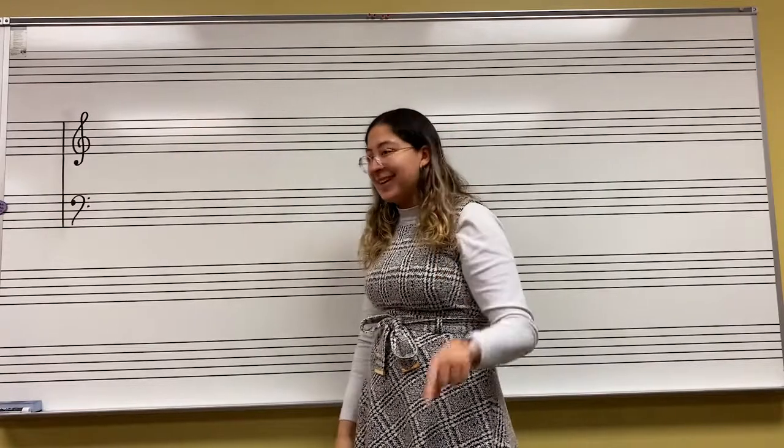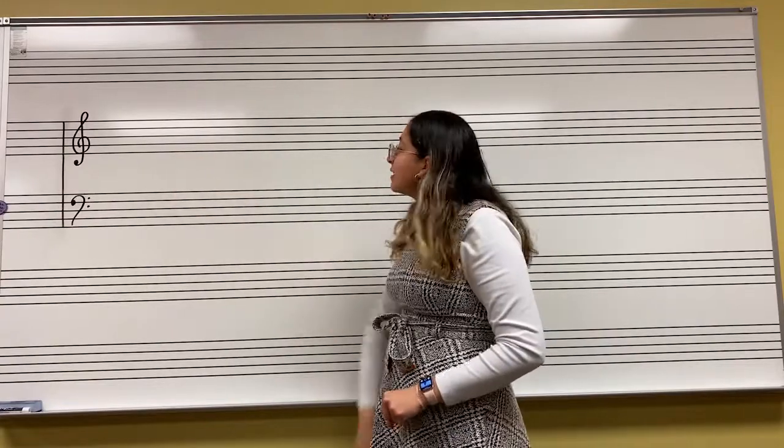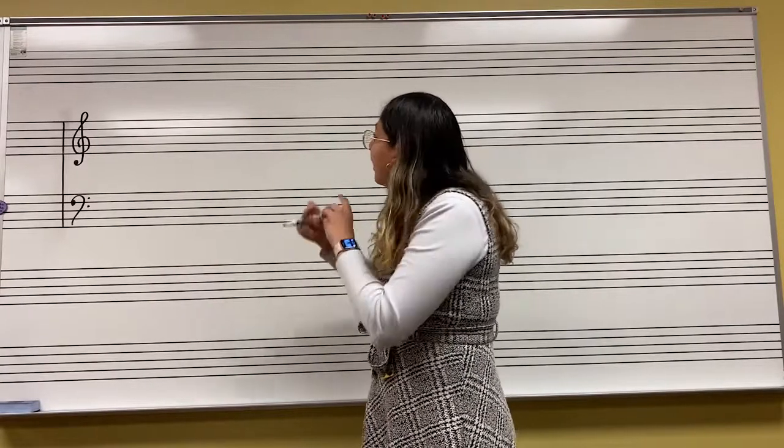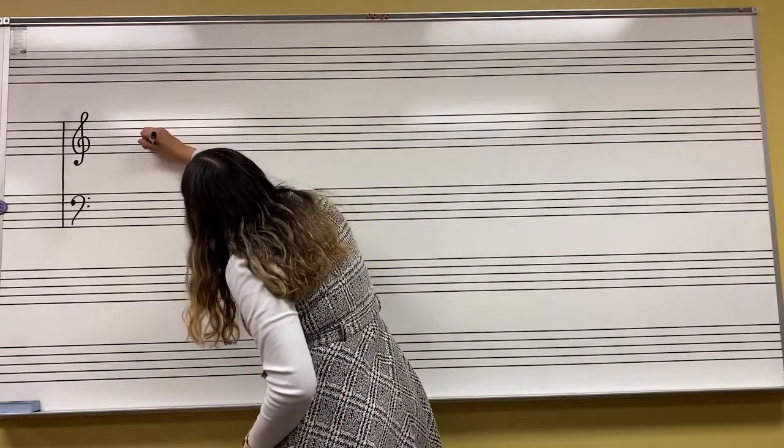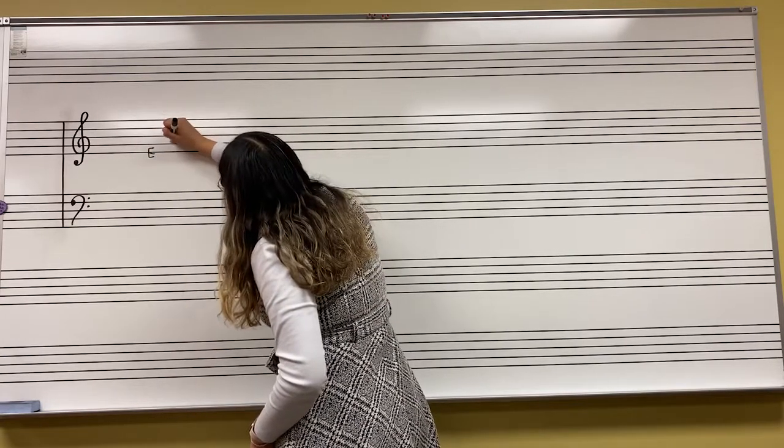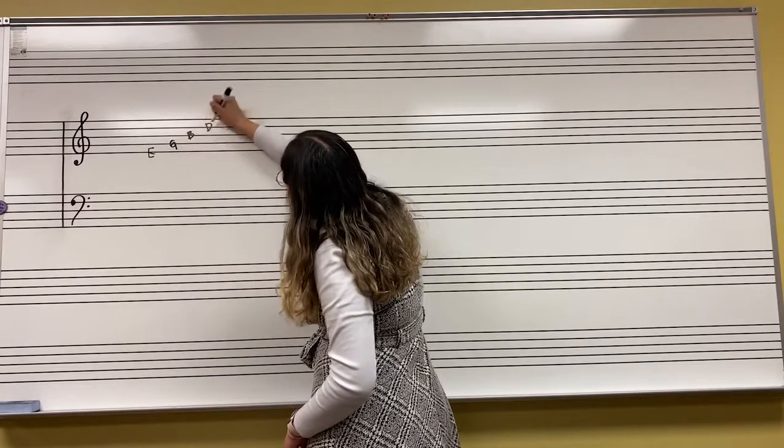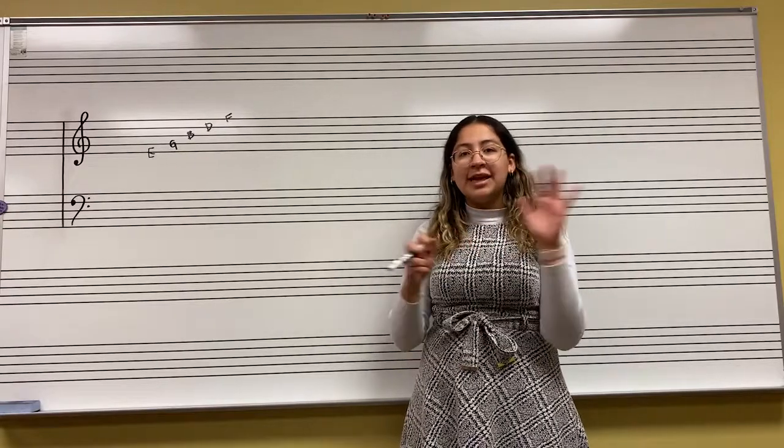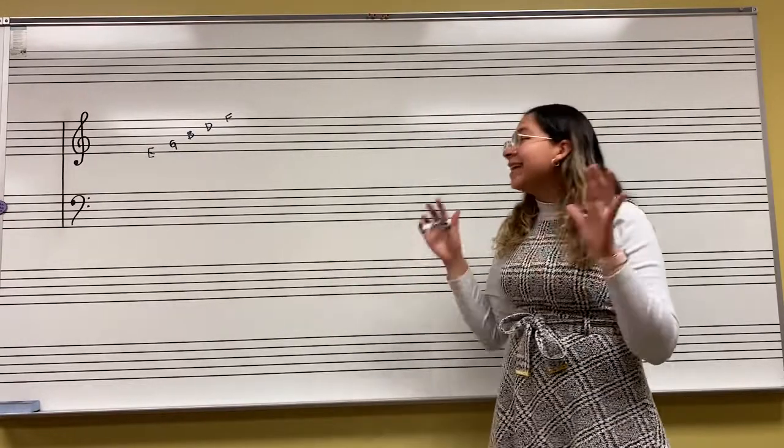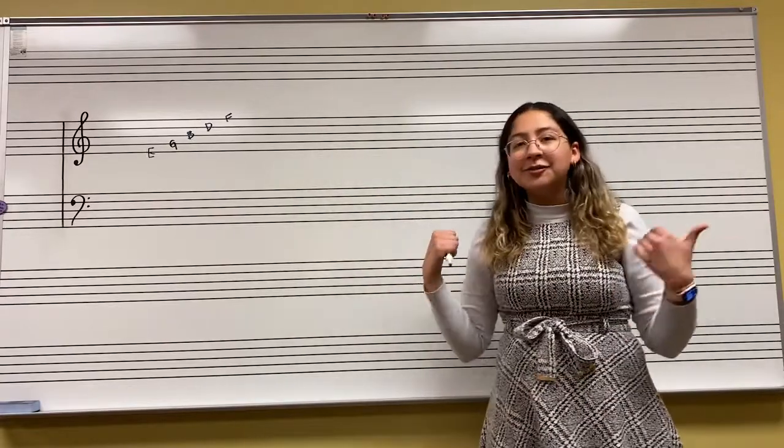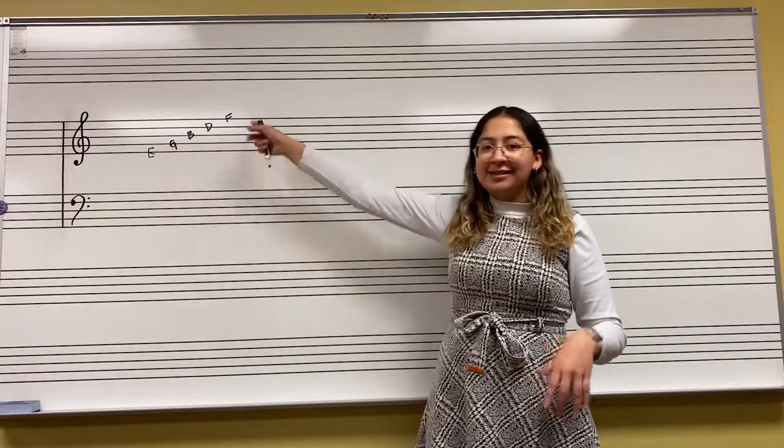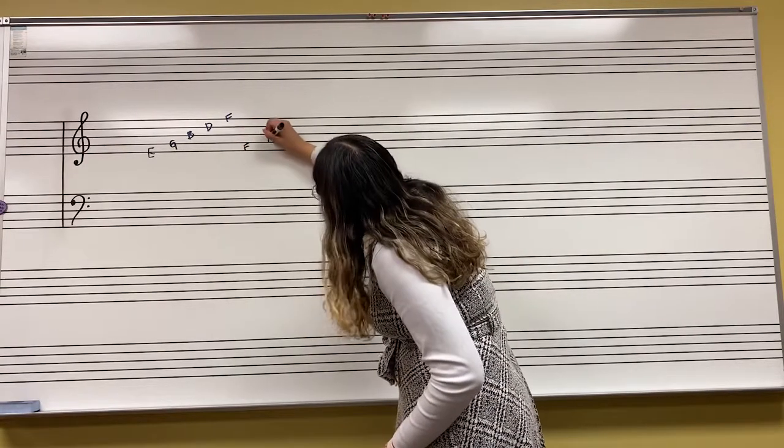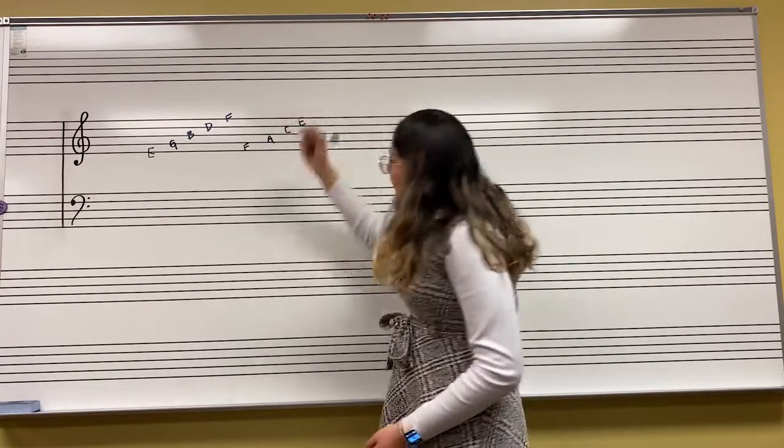So in treble clef these lines are E, G, B, D, and F. The easiest way to remember these is creating an acronym for these letters. What I go to is 'Every Good Boy Does Fine.' It's the easiest way to remember those lines. And then we have the spaces, and those spaces spell out F-A-C-E. And that one's really easy because it's just the word 'face.'